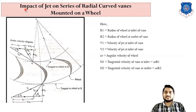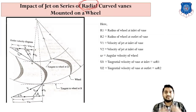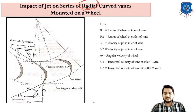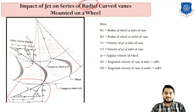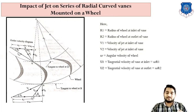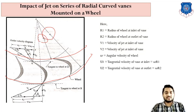Now the last theory of this chapter: impact of jet on series of radial curved vanes mounted on a wheel. The previous theory was about flat blades, but this involves radial curved blades. In real life, only radial curved blades are used in turbines, so this is a very important and fundamental theory. Let us understand the sketch first — these are radial blades, and we must draw velocity triangles because the fluid comes tangentially and the blade is also moving.